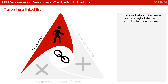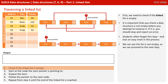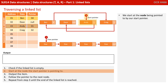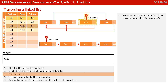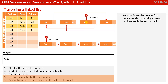Finally, we'll take a look at how to traverse through a linked list, outputting the contents as we go. First, we need to check if the linked list is empty — as always, it's important you check a data structure is not empty before you attempt to traverse it. If it is, you should stop and report an error. Forgetting this step can prevent you from gaining an easy mark in the exam. We can see the list is not empty, so we can proceed. We start at the node being pointed to by our start pointer, output the contents of the current node — in this case Andy — then follow the pointer from node to node, outputting as we go, until we reach the end of the list.